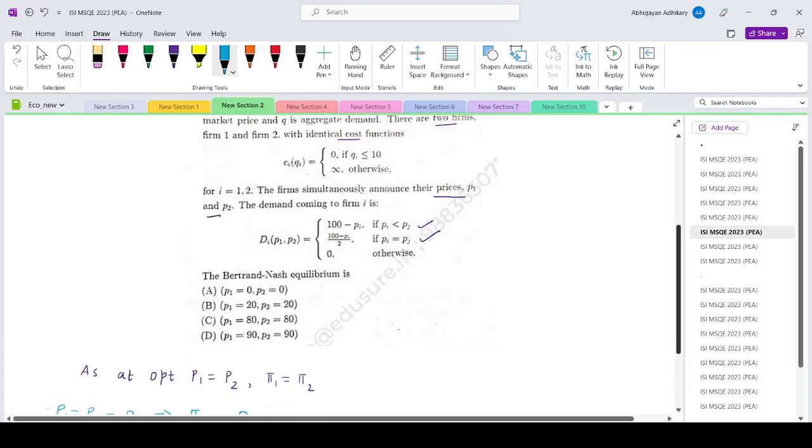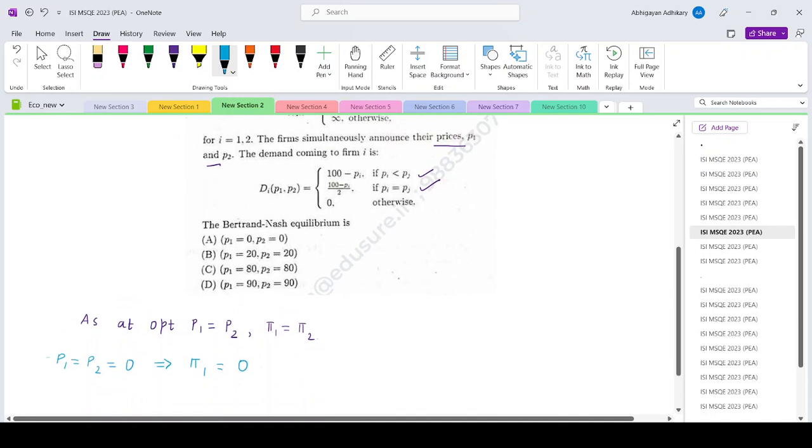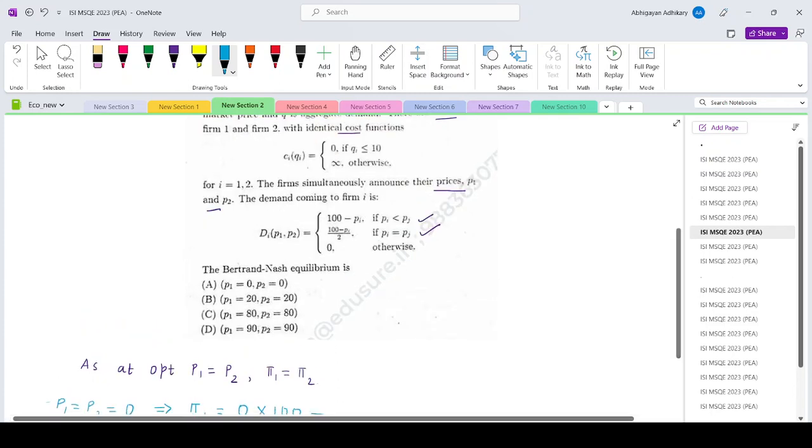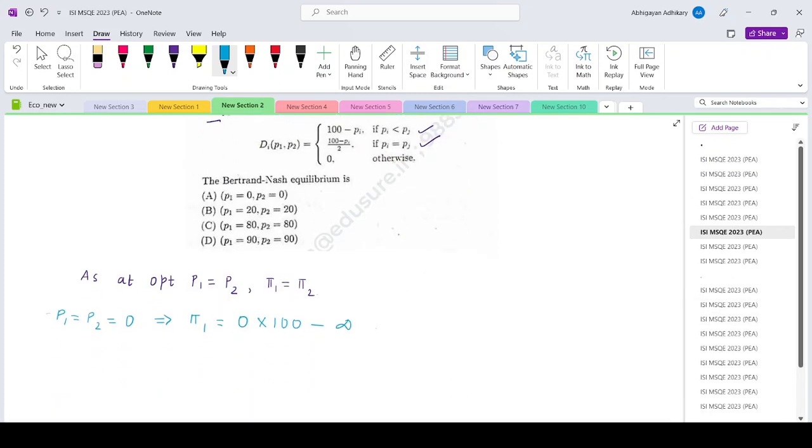If the price is 0, then the quantity demanded would be basically 100. And if it is producing all 100 units, then it will incur infinite cost. So this is basically tending to minus infinity.